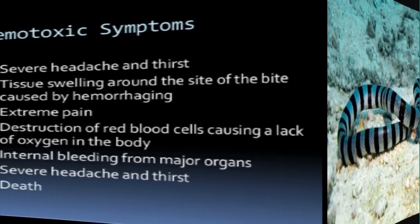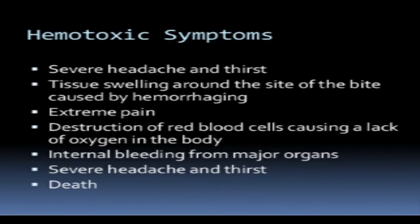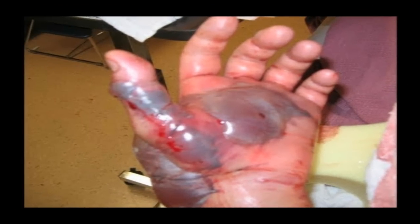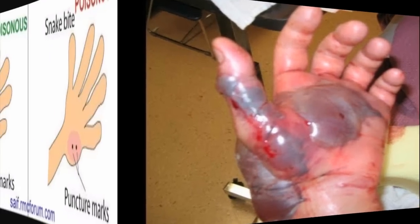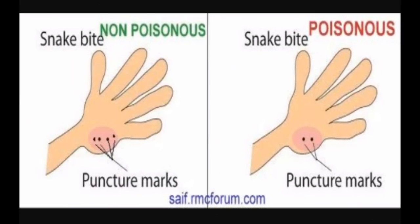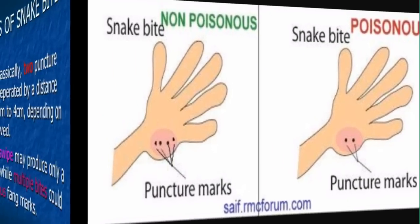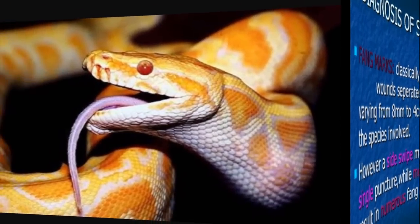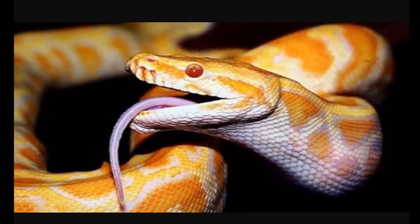Neurotoxic venom causes death by paralysis of the respiration muscles. The second category is Hemotoxic, which is typical of Vipers. Hemotoxic venom causes tissue destruction and widespread hemorrhage. These are the effects seen in the three most common poisonous snakes of India.